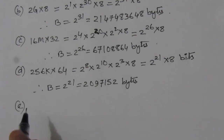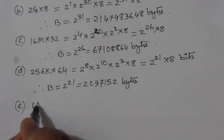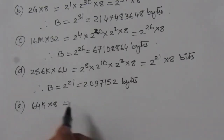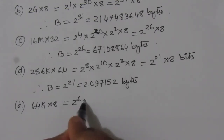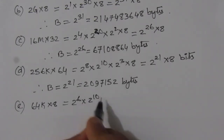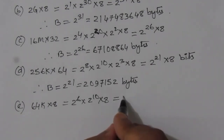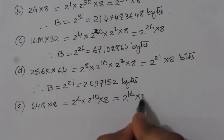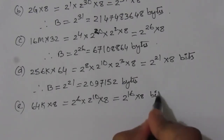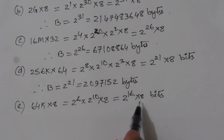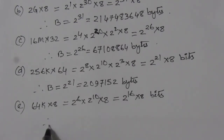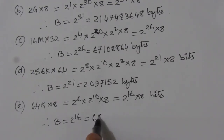In part e, we have 64K × 8. Here 64 = 2^6 and K = 2^10, so we have 2^16 × 8 bits. Dividing by 8 to get bytes, B = 2^16 = 65,536 bytes.